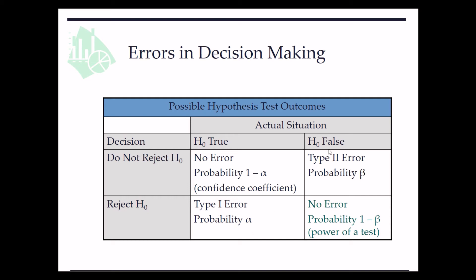On the other hand, if H0 is false, we do not reject it, we make a type 2 error. We reject it, we make no error. This is with probability 1 minus beta. 1 minus beta is the power of our hypothesis test.